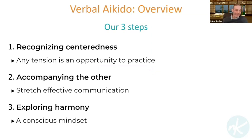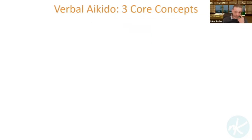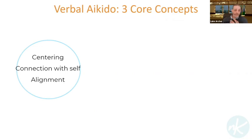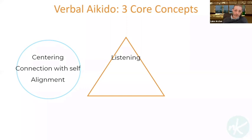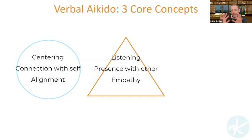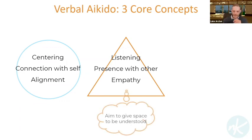The three core concepts we're always exploring are: centering — connection to self, alignment — the key is that you're sharing a centered feeling, not just being fine while the other person is getting annoyed. You're actually there with that centeredness expanding with it. The second core concept is listening — presence with the other, empathy. It's a real empathy move where you're trying to see or feel things from another person's perspective and give them that space.